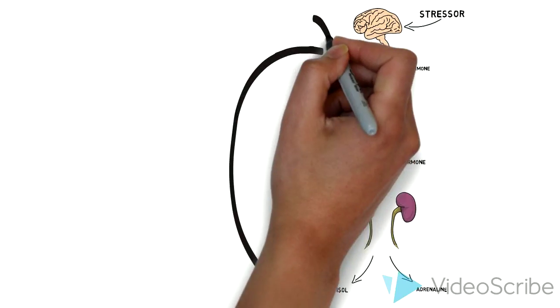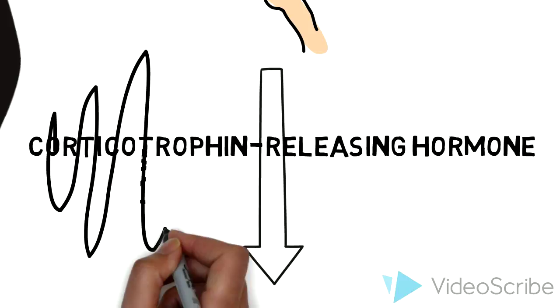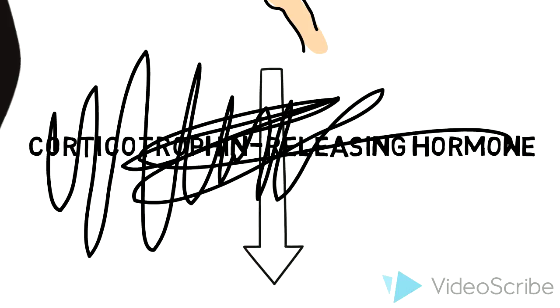The HPA axis is a negative feedback loop, meaning once the body is creating too much cortisol, the adrenals will send a signal to the hypothalamus and essentially shut it off from making more CRH.